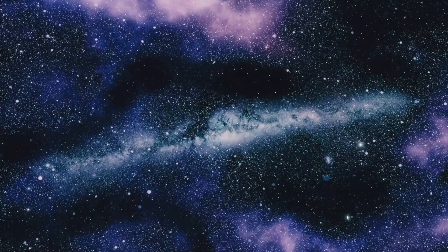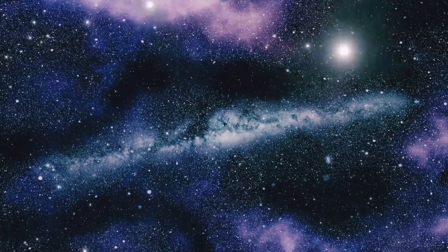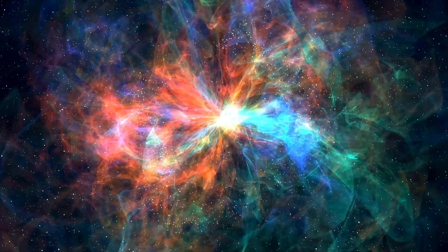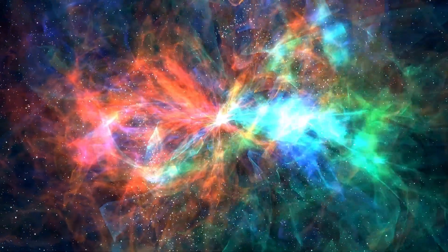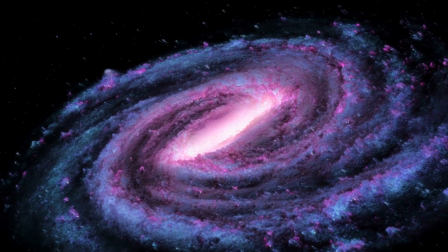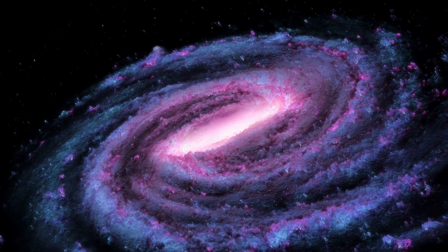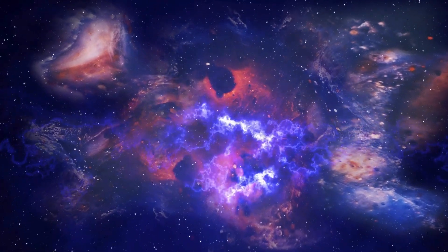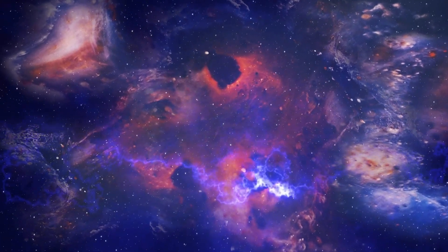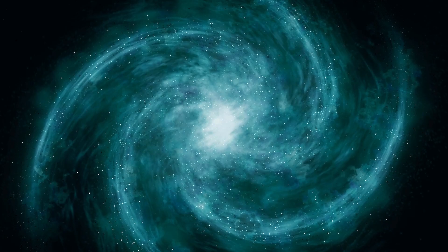Betelgeuse isn't the only red supergiant in our galaxy. Others, like Eta Carinae, might burst into the sky before it does. Statistically, our Milky Way should witness a supernova roughly every 50 years, yet we haven't seen one in the last 400 years. However, we've observed remnants of past explosions, indicating that we're overdue for an extraordinary cosmic event. It's just a matter of time before the next star puts on its dazzling show for the universe to witness.